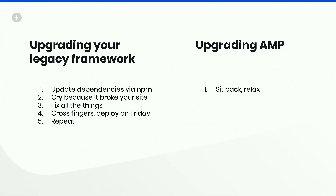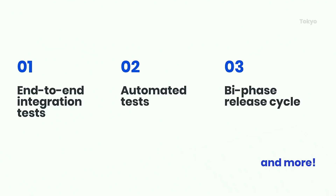AMP is also evergreen without redeploy. If you upgrade a legacy framework, you have to update dependencies via NPM, cry because it broke your site, fix all the things, cross fingers, deploy on a Friday, and then repeat. With AMP, you just sit back and relax because it all lives on a CDN. We do this carefully with end-to-end integration tests, automatic tests, and bi-phase release cycles to make sure we don't break the web overnight. You have a decentralized team of JavaScript engineers working to make your website better every week.